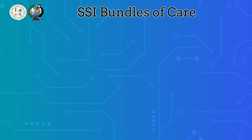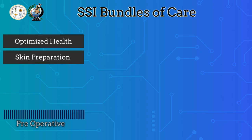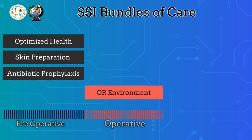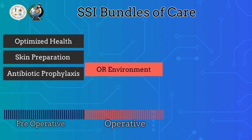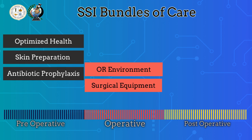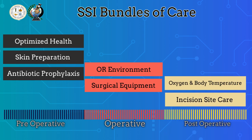To wrap it up, here is the bigger picture of surgical site infection prevention through its care bundle. Under the pre-operative phase: optimize the patient's health, give particular attention to skin preparation, and ensure proper administration of antibiotics as prophylaxis. Under the operative phase: ensure the safety of the environment and its various surgical equipment. Under the post-operative phase: maintain proper oxygenation and body temperature, and perform proper incision site care. Perform this care bundle and we can assure that we will decrease and possibly eliminate surgical site infection in our institution.